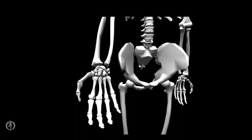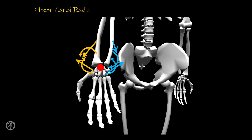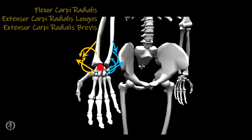Finally, in the frontal plane, the wrist has an anterior-posterior axis that goes through the capitate. Any MTCs that have a force vector that is radial to this axis of rotation will create a torque that will radially deviate the wrist. MTCs that will radially deviate the wrist include the flexor carpi radialis, the extensor carpi radialis longus, and the extensor carpi radialis brevis, while those that will ulnarly deviate the wrist include the flexor carpi ulnaris and the extensor carpi ulnaris.